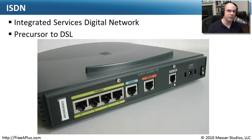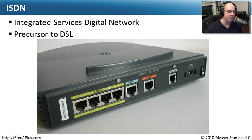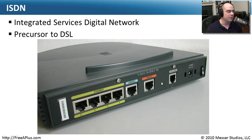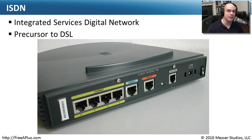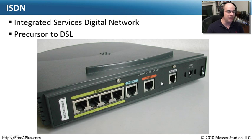One of the first higher-speed connections for home office networking was ISDN. This ISDN router looks very similar to the routers used on cable modem networks — it has Ethernet ports, a console connection, and an ISDN link installed by your phone company. Unlike a standard analog phone line, ISDN — Integrated Services Digital Network — provides a digital connection into your house. It delivered about 128 kilobits per second, doubling the speed of a 56K modem, and was a precursor to DSL.